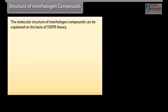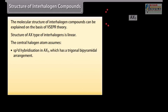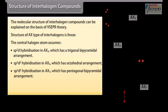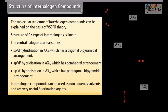The molecular structure of interhalogen compounds can be explained on the basis of VSEPR theory. The AX type is linear. The central halogen atom assumes SP³D hybridization in AX₃, giving a trigonal bipyramidal arrangement; SP³D² hybridization in AX₅, giving an octahedral arrangement; and SP³D³ hybridization in AX₇, giving a pentagonal bipyramidal arrangement. Interhalogen compounds can be used as non-aqueous solvents and are very useful fluorinating agents.